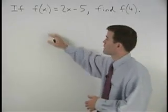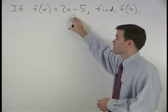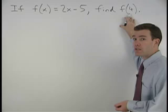In other words, if we put an x into our function, we get a 2x minus 5 out. So what happens when we put a 4 into the function?